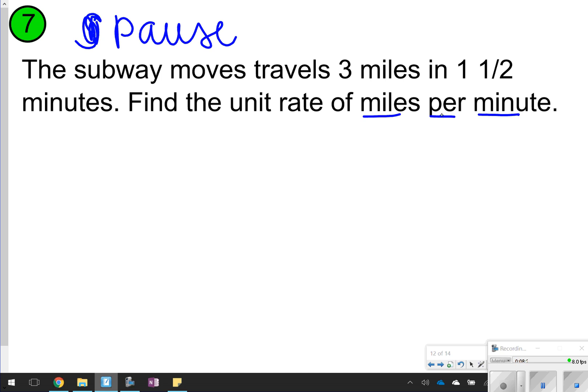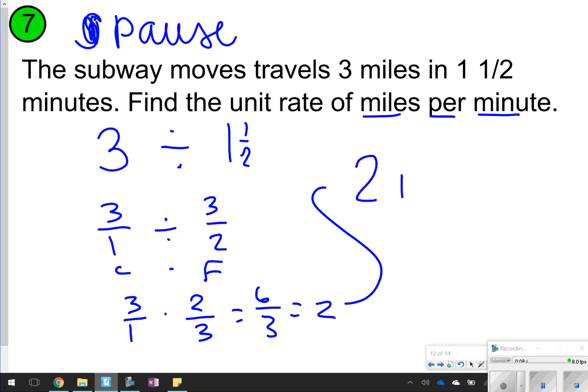All right, here we go. Since I'm doing miles per minute, that means I'm doing miles divided by minutes. I'm dividing three by one and one-half. If I want to, I can write these as improper fractions. And then show my copy flip. So three over one times two over three. And when I multiply straight across, I get six over three, which is equal to two. So that means my answer will be two miles per minute.